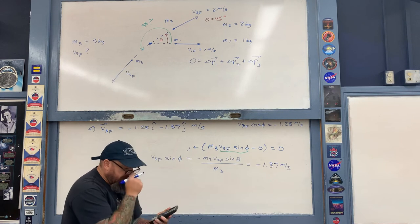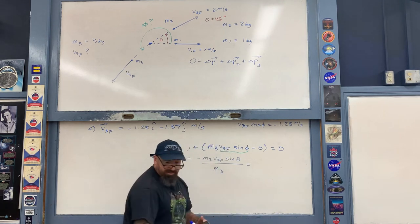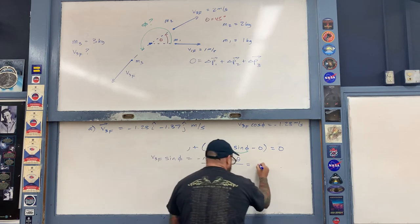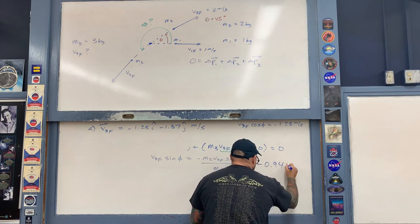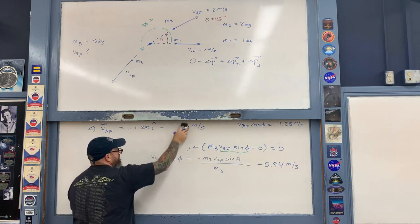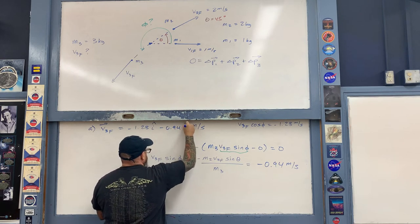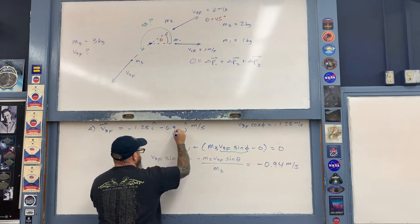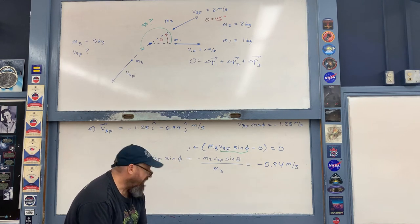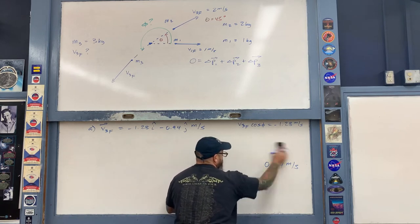Checking the calculation for v3_final sine phi — a correction: the y-component is negative 0.94 meters per second, not the earlier value. This correction is reflected in the final vector answer.